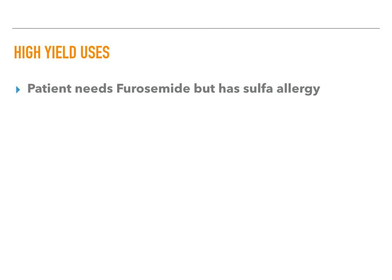If the patient needs furosemide but has a sulfa allergy, you need to know that furosemide is a sulfa drug. A question might describe a patient with a sulfa allergy who goes into heart failure, is started on furosemide, and then develops a terrible side effect profile. They still need a loop diuretic, but can't take furosemide — the answer is ethacrynic acid, a loop diuretic that is not a sulfa drug.